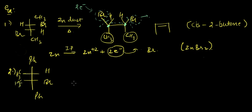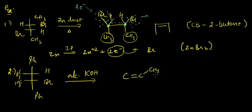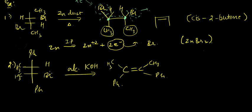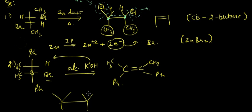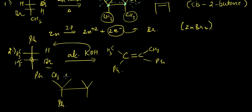We have another example: a compound with CH3 and Ph groups, and we pass it with alcoholic KOH. Obviously we would get an alkene product. To see how it forms, we draw the sawhorse formula. The first carbon has Ph, CH3, and Br; the second carbon has CH3, H, and Ph.